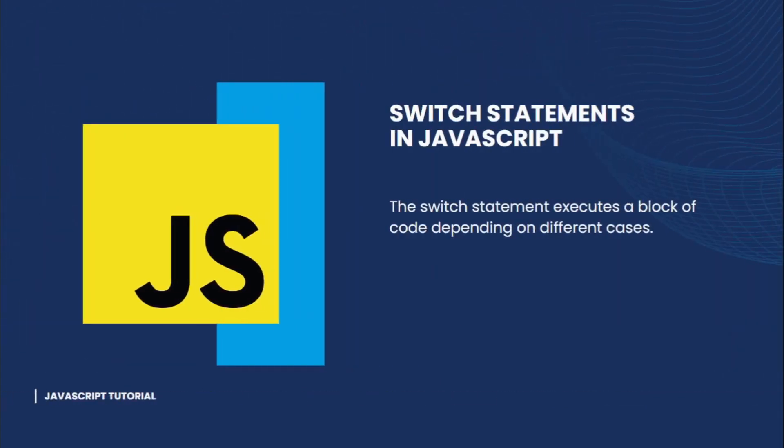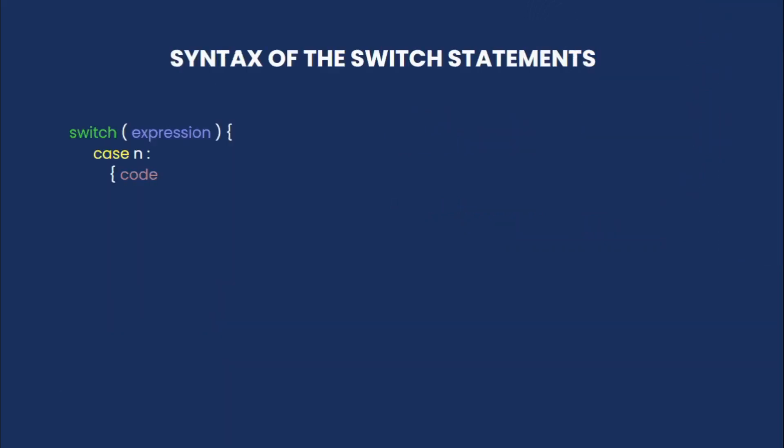The switch statement executes a block of code depending on different cases. You can see here the syntax of writing switch statements. First, we have an expression, then we have a bunch of cases. The switch statement evaluates this expression and then it compares the result with these cases. If there is any match, then it will execute the corresponding block of code.